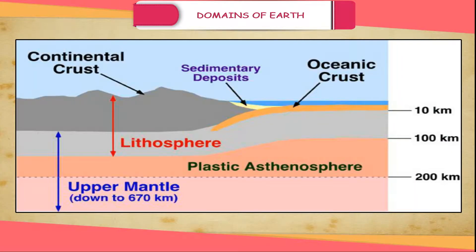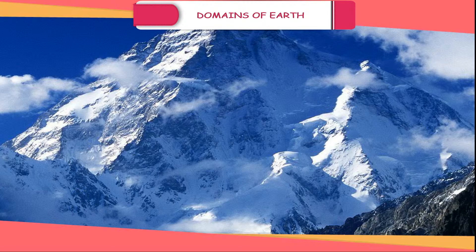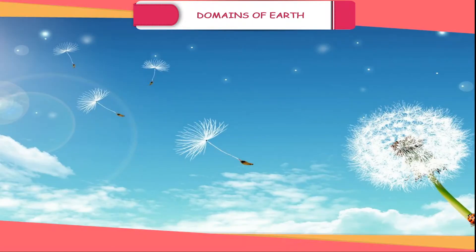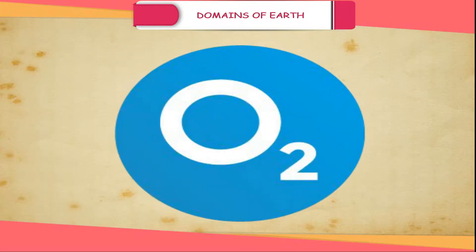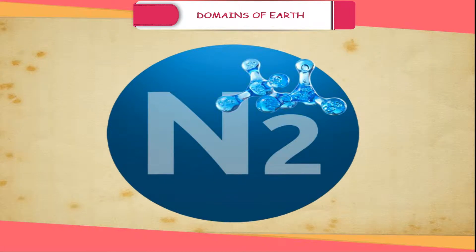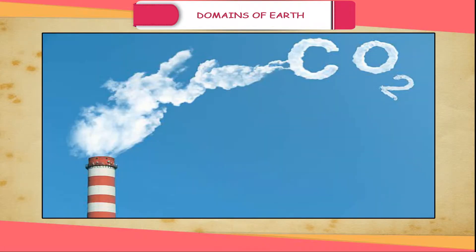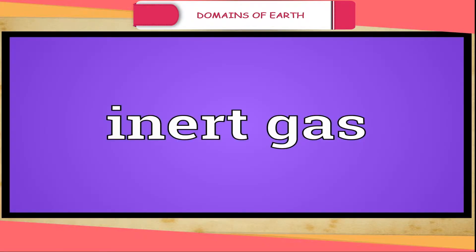The solid portion of the Earth on which we live is called the lithosphere. Rocks, in their solid form, are found only in the lithosphere. The gaseous envelope of air that surrounds the Earth is known as the atmosphere. The atmosphere contains oxygen, nitrogen, carbon dioxide and inert gases.